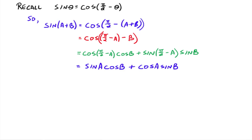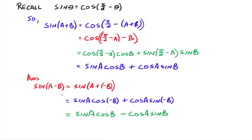Now that we have the sine sum identity, we can derive the difference. sin(A−B) = sin(A+(−B)). Using the sine sum identity, that gives sinA · cos(−B) + cosA · sin(−B). Cosine is even, so cos(−B) = cosB; sine is odd, so sin(−B) = −sinB. That changes the plus to a minus, giving us sin(A−B) = sinA cosB − cosA sinB.